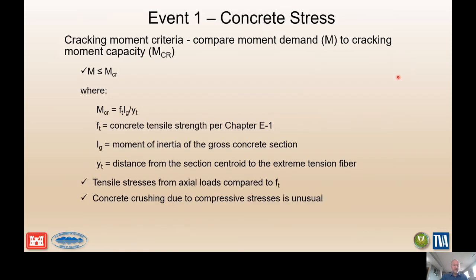The first node is the cracking moment criteria, where we compare the actual demand moment to the cracking moment capacity. This is a simple stress = MC/I type evaluation, where the concrete tensile strength is based on information provided in Chapter E1 of your manual. In many cases in a risk analysis, it becomes pretty clear when looking at severe seismic loadings that the section is going to crack, and this node can even be left off the event tree with the understanding that the probability is going to be 1.0.